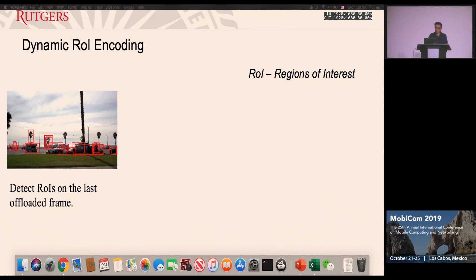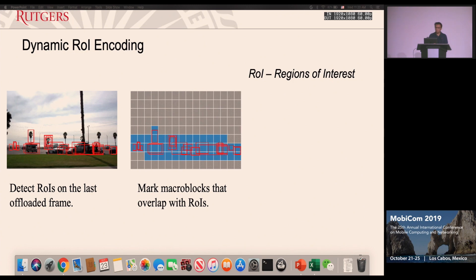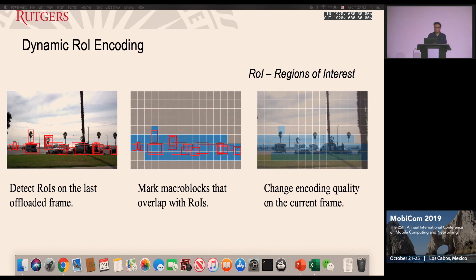This is why we propose dynamic region of interest encoding. The key principle is to apply higher encoding quality to regions that carry more information, and lower quality to regions that don't. We leverage the spatial and temporal correlation between consecutive frames: if many objects or regions of interest were detected in the last frame, those regions are likely to carry important information in the next frame. We create an encoding mask where macro blocks overlapping with the previous frame's regions of interest get high quality, and the remaining blocks get low quality. This largely reduces encoded frame size while preserving the most important information.